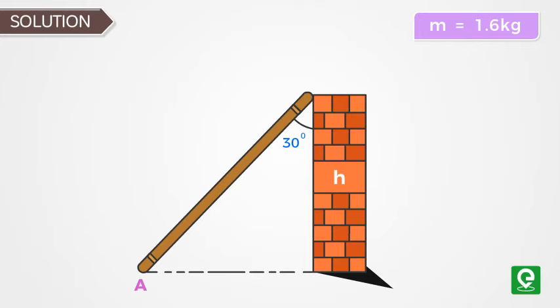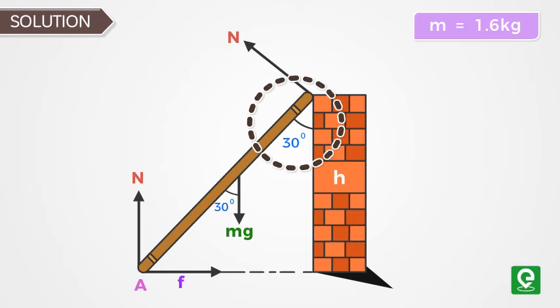Solution: We are given a stick of mass equal to 1.6 kg. The reaction force of the wall on the stick is equal in magnitude to the reaction force on the floor. Frictional force F is acting at the bottom of the stick. Weight mg is acting downwards. If the angle between the stick and the wall is 30 degrees, then the angle will also be 30 degrees.